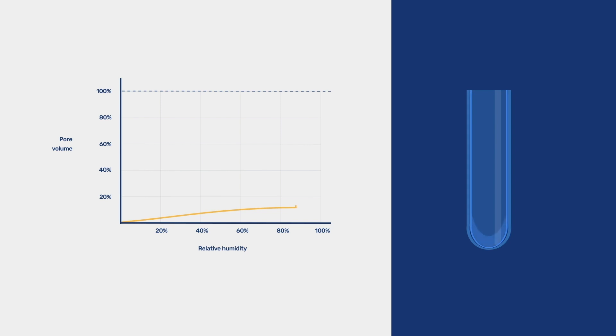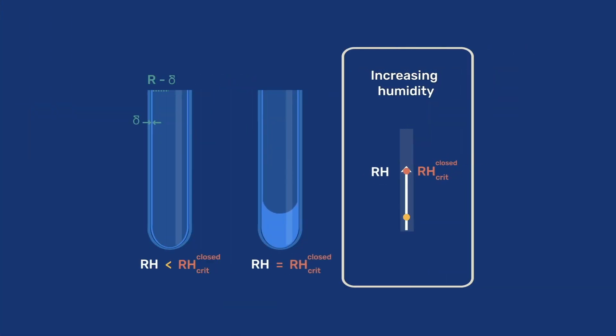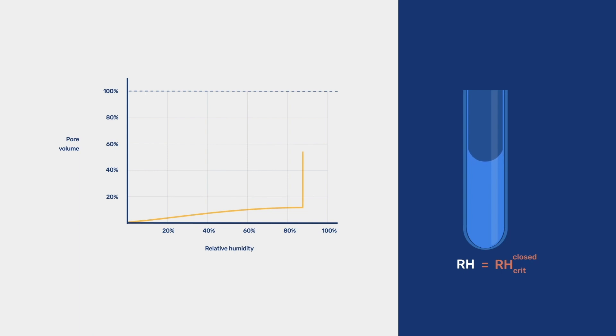This corresponds to a critical relative humidity, RH CRIT closed, at which it becomes thermodynamically favorable for water to condense in this pore. Condensation begins at the bottom of our tube and gradually fills the pore as more moisture is made. In this process, the relative humidity remains locally constant within the pore and equal to RH CRIT closed. The humidity can only increase once the meniscus has reached the open end of the pore.